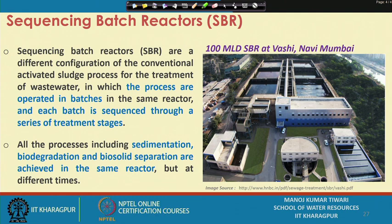In an SBR, which works on a similar principle, the processes are operated in a batch mode rather than as a continuous process like in conventional activated sludge. One batch of water is processed for one step, then the same batch is processed for the second step, third step, and so on. It is done in a batch — that is why we call it a batch reactor — and each batch is sequenced through a series of treatment stages. That is how the name 'sequencing batch reactor' comes about.